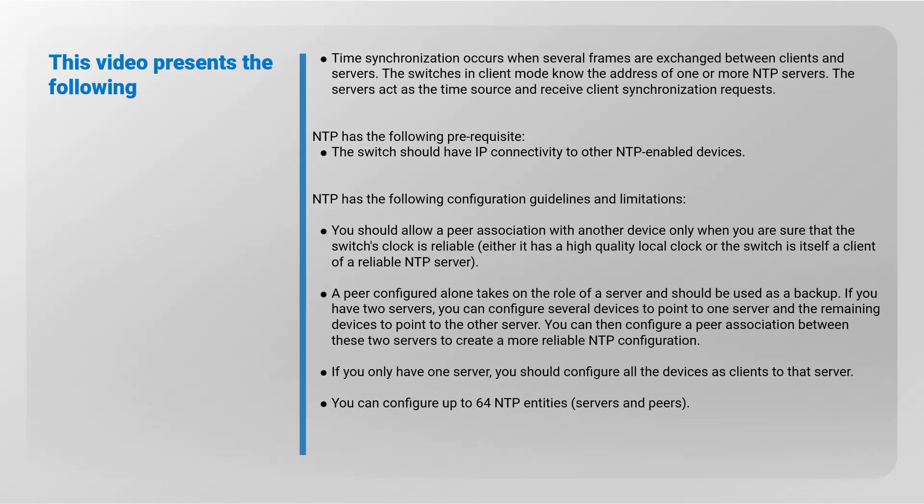NTP configuration guidelines and limitations: you should allow a peer association with another device only when you are sure the switch's clock is reliable — either it has a high-quality local clock or it is itself a client of a reliable NTP server. A peer configured alone takes on the role of a server and should be used as a backup. If you have two servers, configure several devices to point to one and the remaining to the other, then configure a peer association between the two servers. If you only have one server, configure all devices as clients to that server. You can configure up to 64 NTP entities, servers and peers.